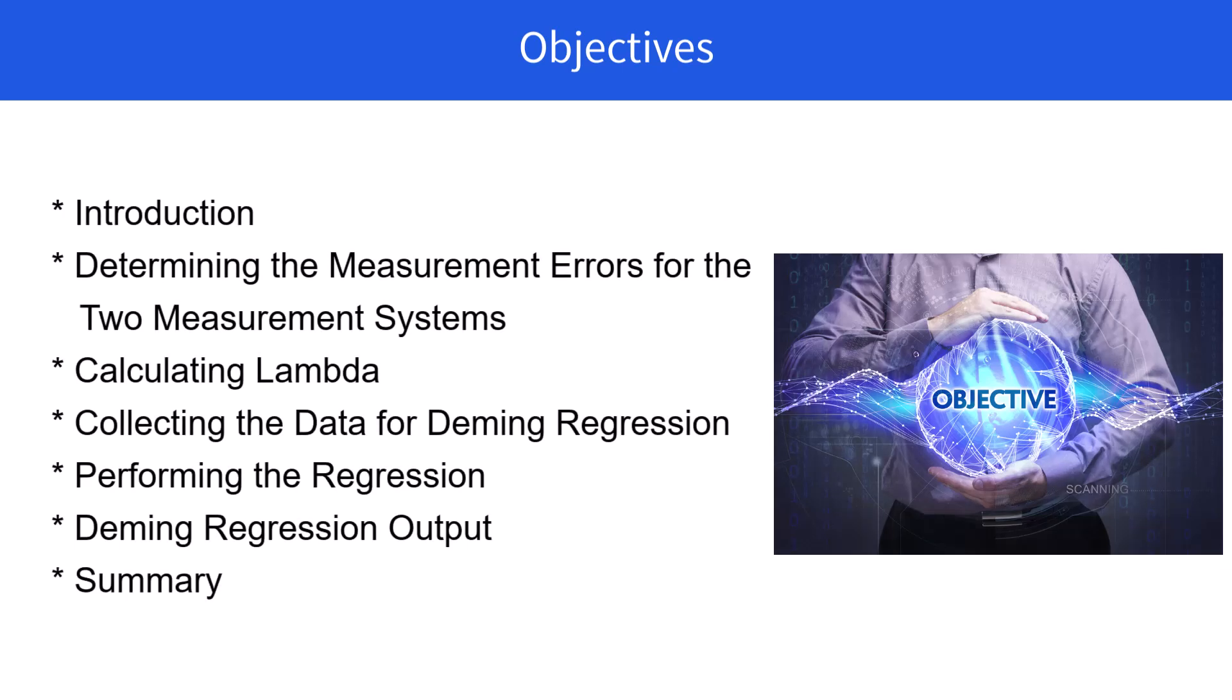Our objective today is to introduce Deming regression. Then we're going to show how measurement errors for the two measurement systems are determined. We take a ratio of them that becomes lambda. We're going to perform the regression, look at the output, and then summarize the results.